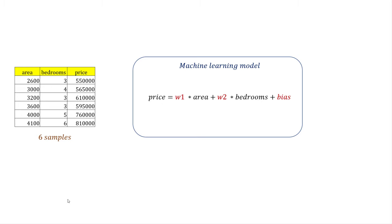Let's say we are building a machine learning model for house price prediction. The training dataset has area, bedroom, price, etc. We are trying to build a model — a linear equation — that can tell you price based on area and bedrooms. In this linear equation, all we are trying to do is find the values for w1, w2, and bias.